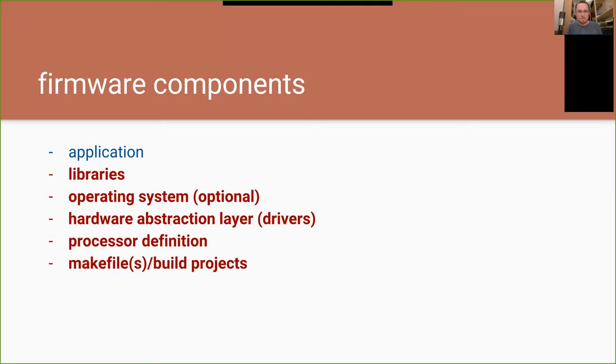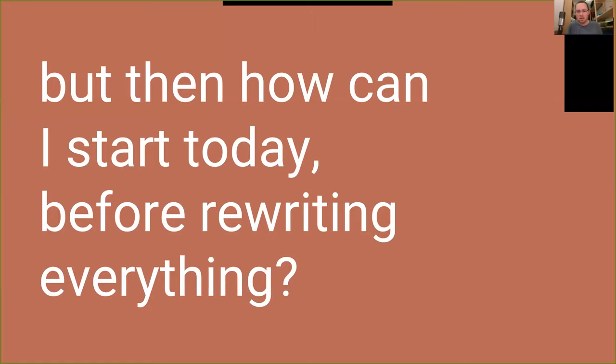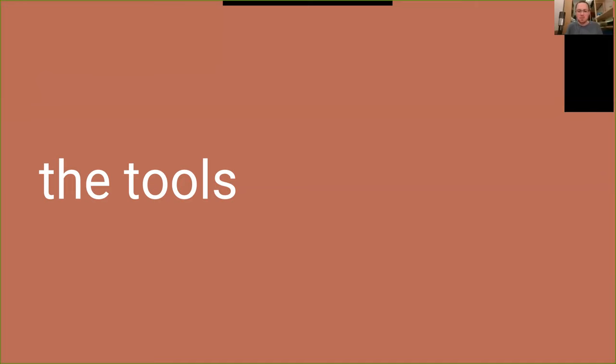So how can you start today before you rewrite the entire world in Rust? There's a lot of tooling out there — some specifically developed for embedded systems in Rust, some just for embedded systems, some just for Rust. I'm going to go over a couple in detail and skim over others. For all of them, I'll try to give a good overview of the tool name and use case — so if you run into a problem three months from now and don't remember this, you can skim through the presentation and find what you need.